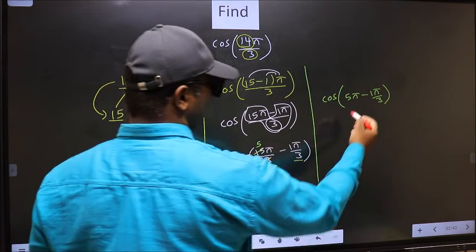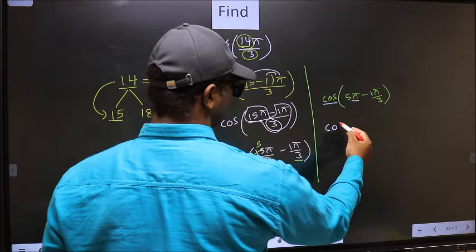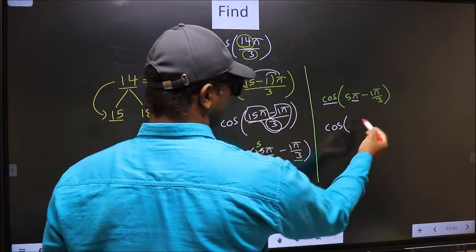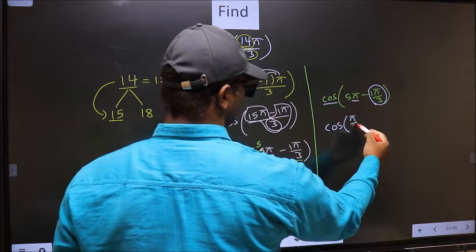Next, here we have π. So cos is not going to change, it will remain cos. And inside we get this angle π by 3.